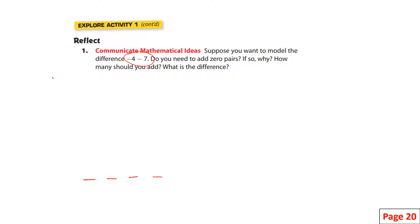Negative four take away seven positives. I want to take those away, but you can't just add a bunch of positives — you could add zeros. So one, two, three, four, five, six, seven zero pairs. Now I can take away those seven positives right there.